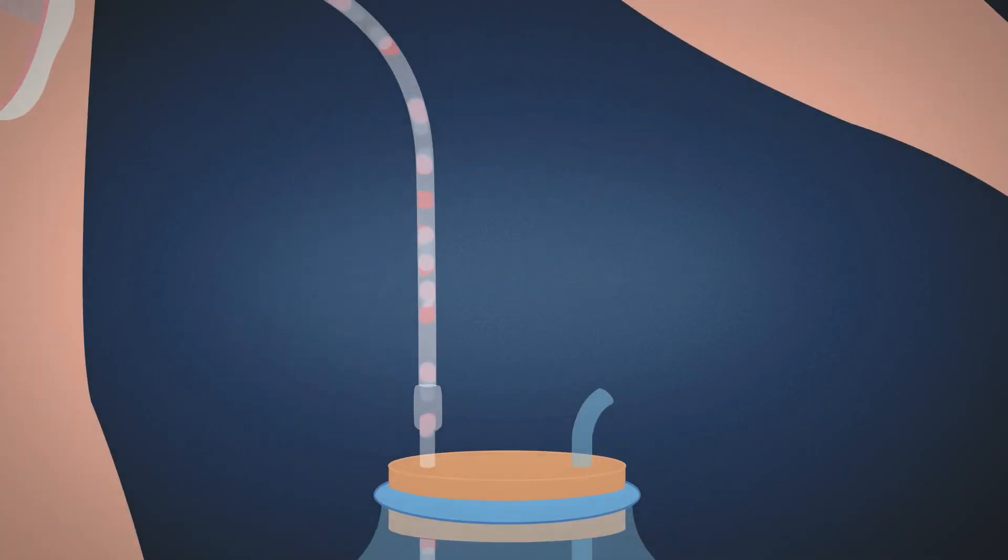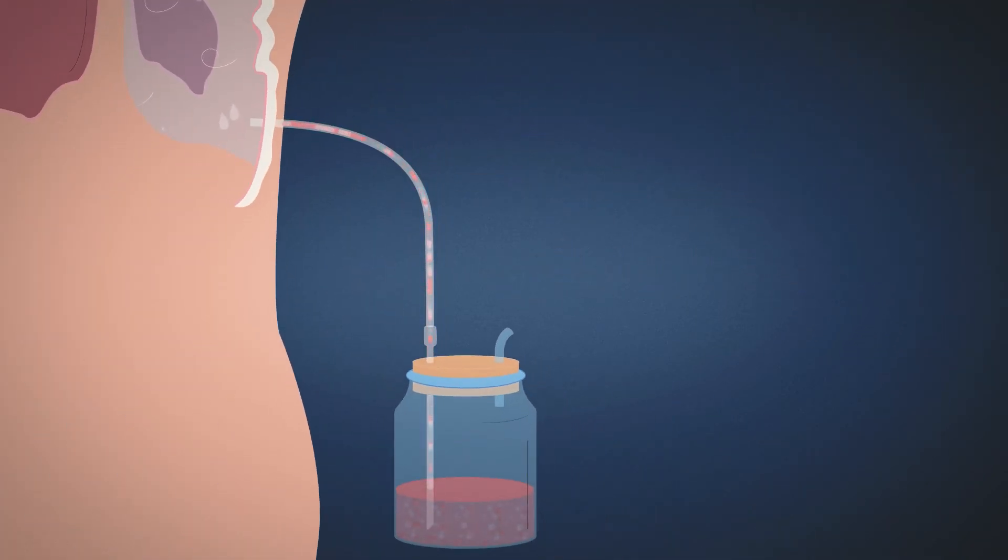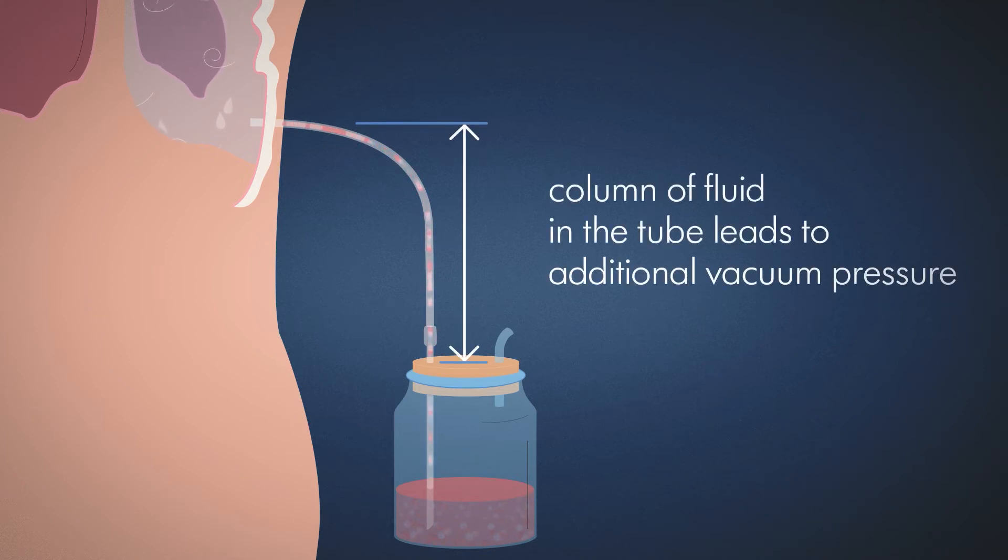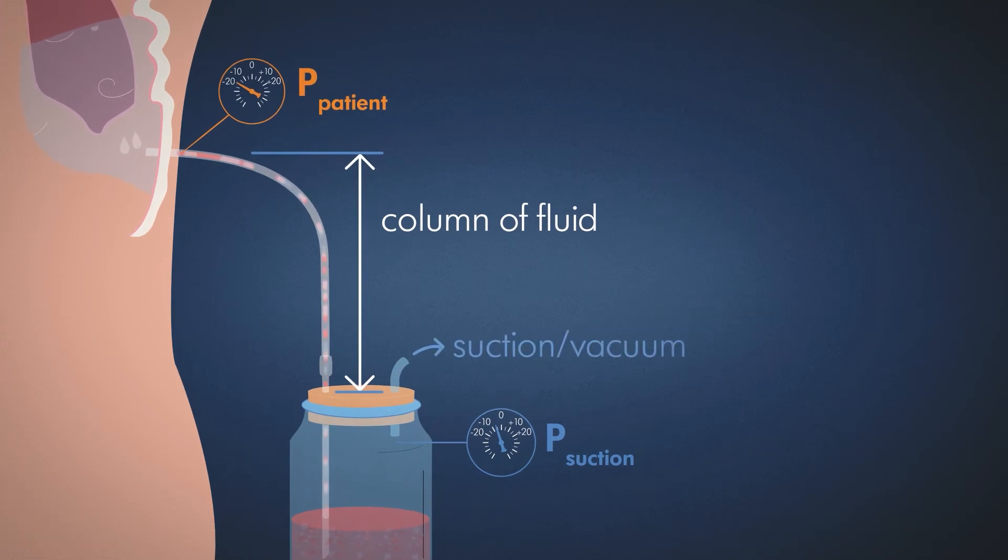If the end of the tube at the drainage container is below the level of the thorax, the column of fluid in the tube leads to additional vacuum pressure. The negative pressure applied to the patient is therefore higher than the suction level set at the thoracic drainage system.